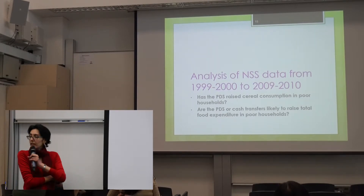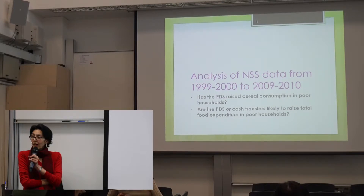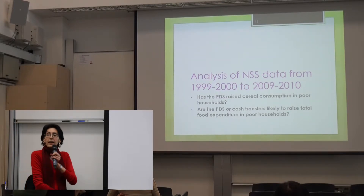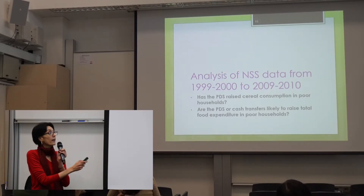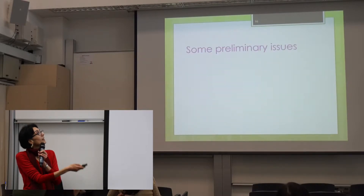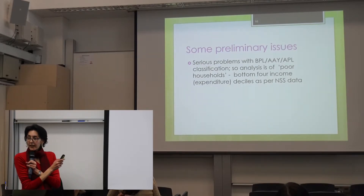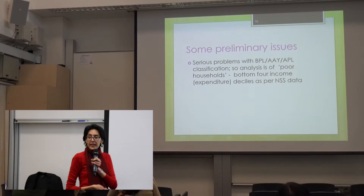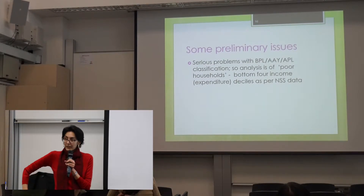Moving on to the data: I've used three NSS rounds — National Sample Survey rounds — 1999-2000, 2004-05, and 2009-10, covering an 11-year period. I'm basically looking at two broad questions: has the PDS raised cereal consumption in poor households, and is it likely to raise total food expenditure in poor households? Because of all the serious problems with the targeting, I have not used the BPL/AAY classification at all to check whether the PDS has had a positive impact.